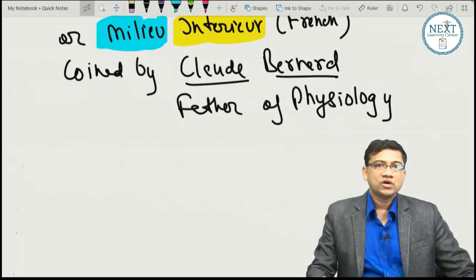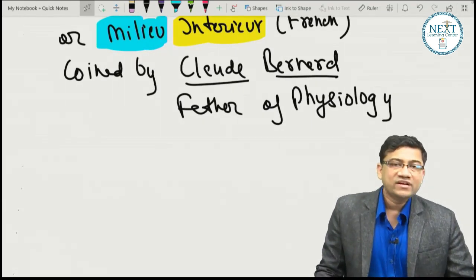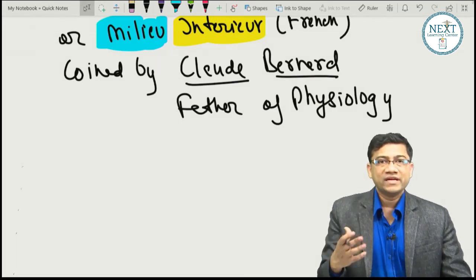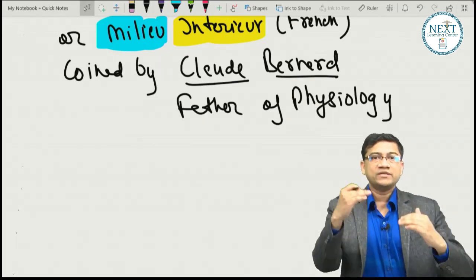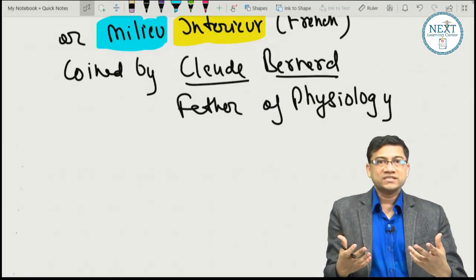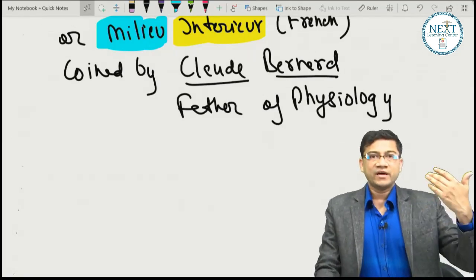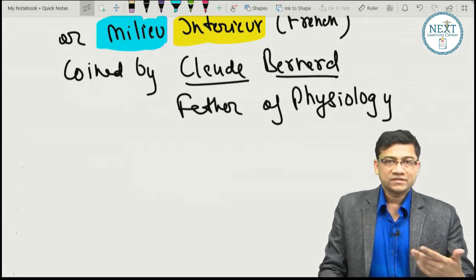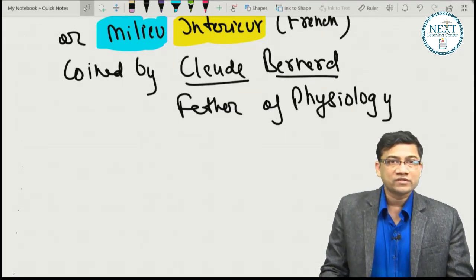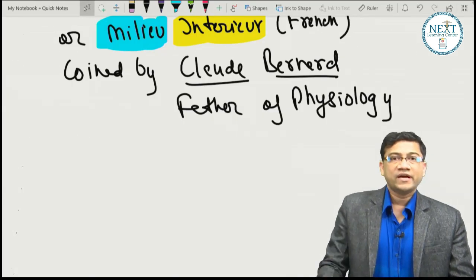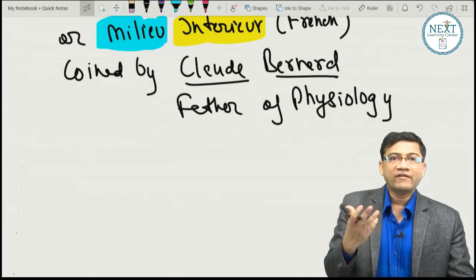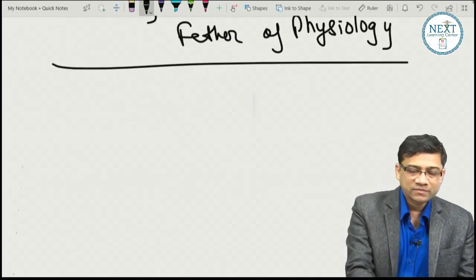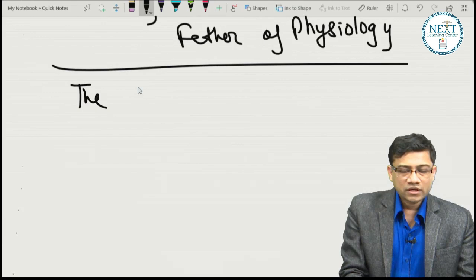Having an environment is important, but it is equally important to maintain that environment. If the environment is altered — very high or low pH, high or low temperature — cells will not be able to function and might die. That is why we must maintain the internal environment, and that process is called homeostasis.